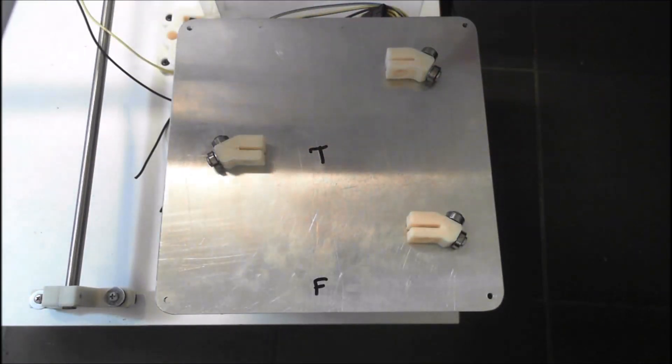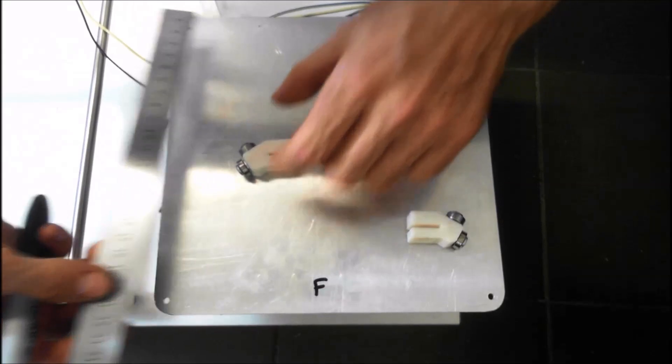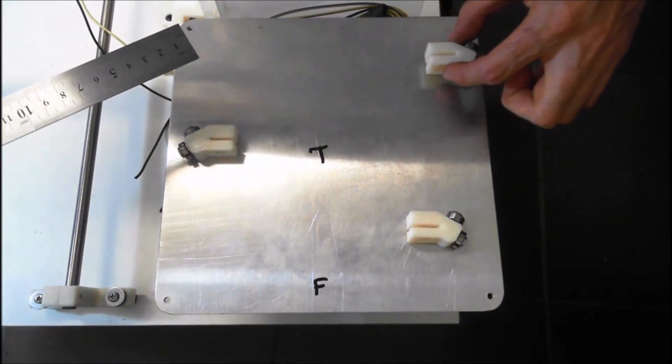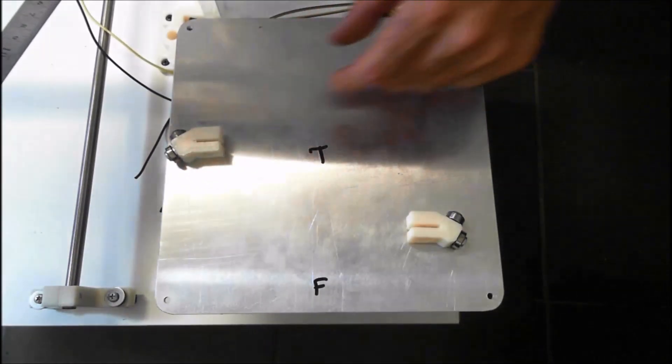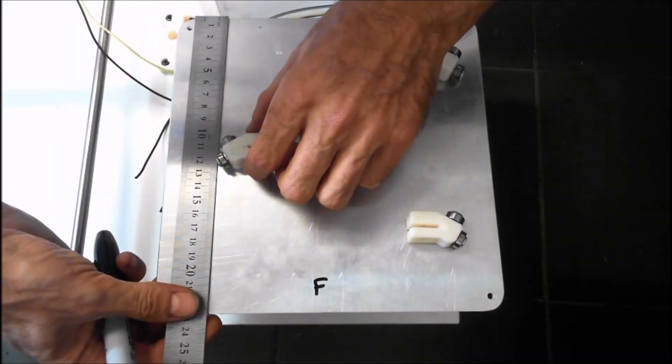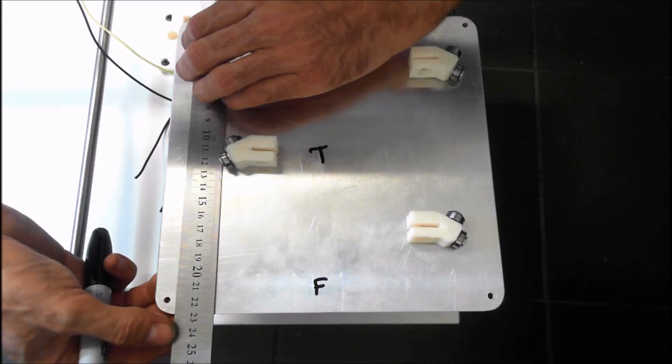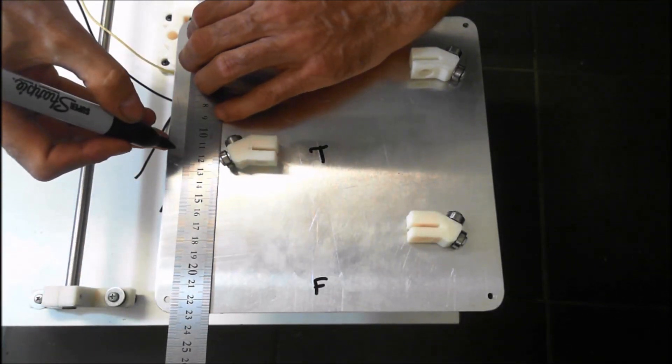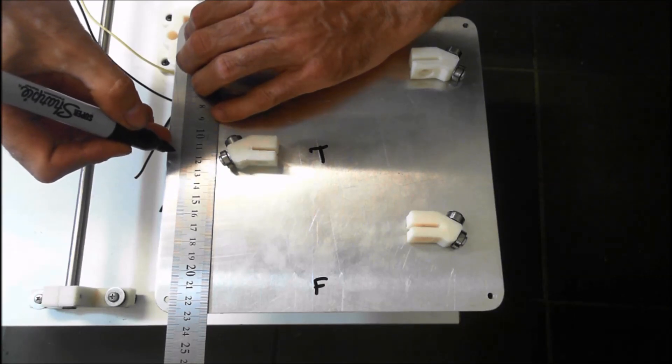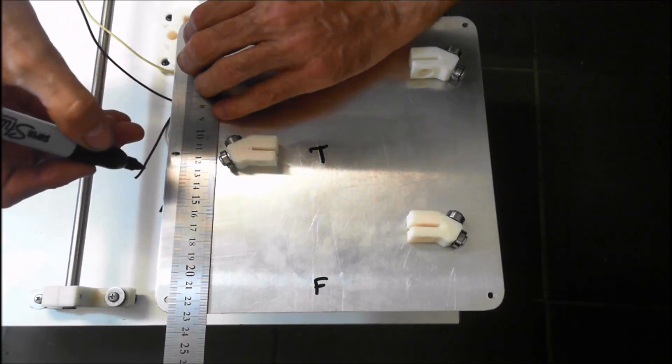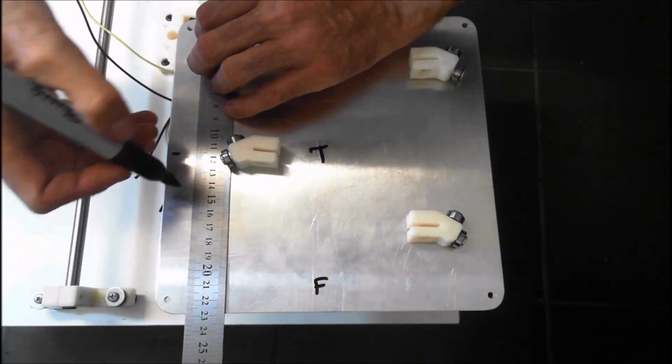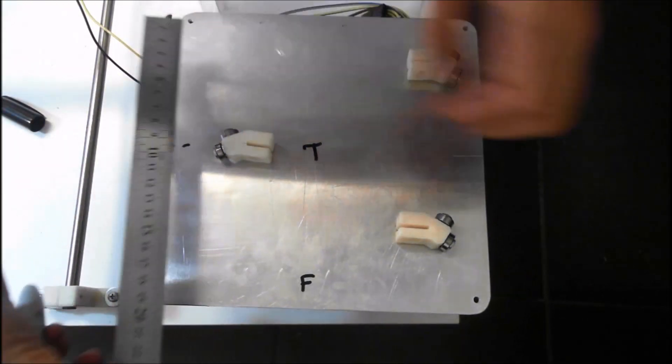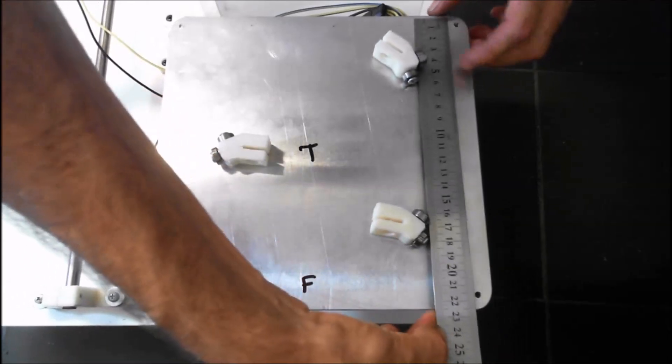Next we're going to mark the positions for the bed bearing mounts. There are three bearing mounts - the single one on one side is going to be right in the center at around 115 millimeters. For the other side, we're going to come in around 40 millimeters from the ends.